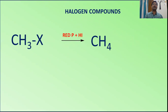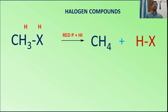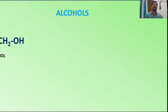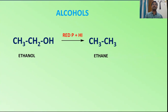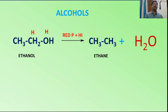Halogen compounds — when a hydrogen compound, for example methyl halide, is treated with red phosphorus and hydrogen iodide, it converts into methane and hydrogen iodide. Two hydrogens are required in this case. For alcohols, when ethanol is treated with red phosphorus and hydrogen iodide, it converts into ethane, and the oxygen leaves as water. Two hydrogens are required — one for CH₂ and one for the OH group.